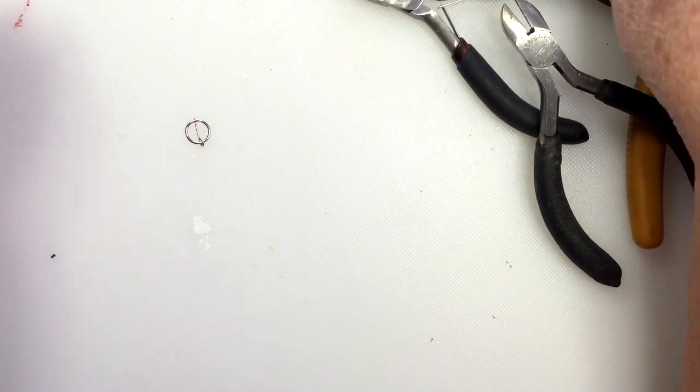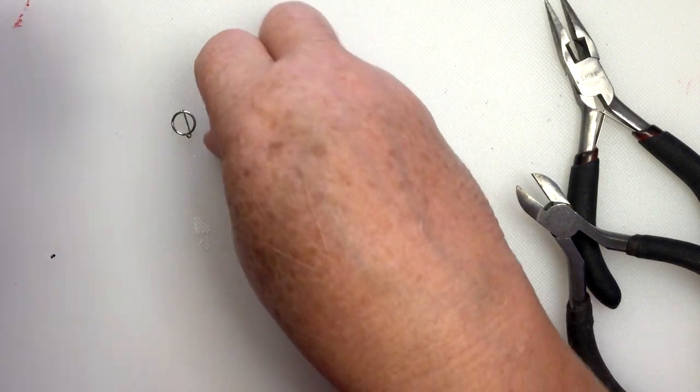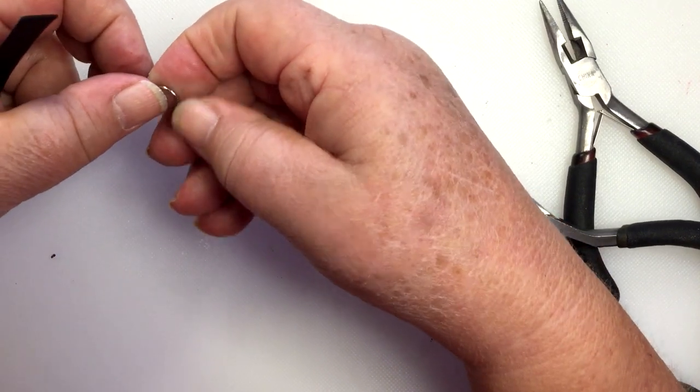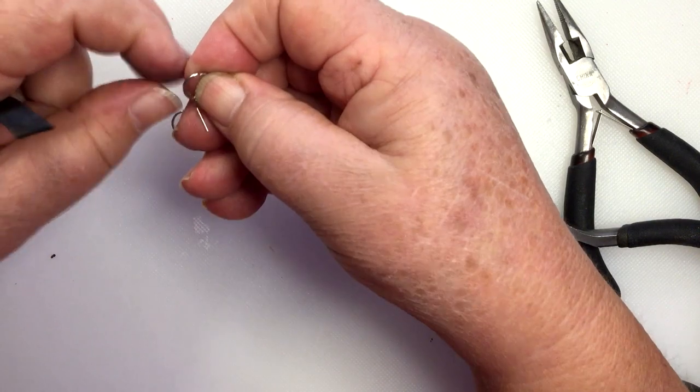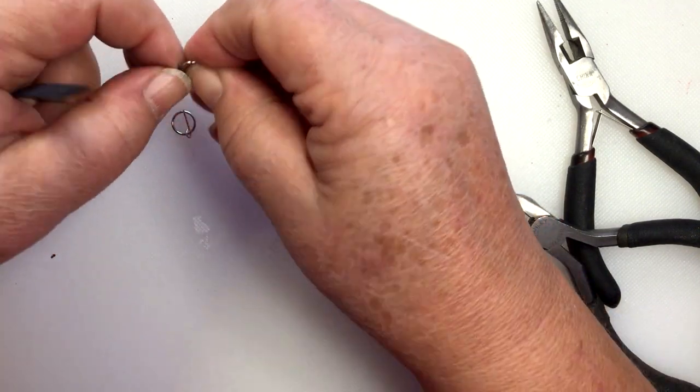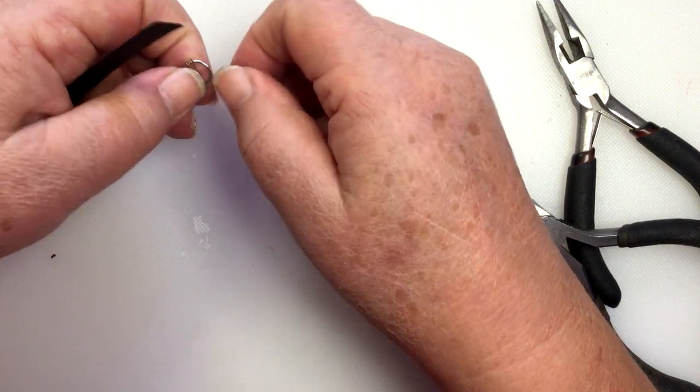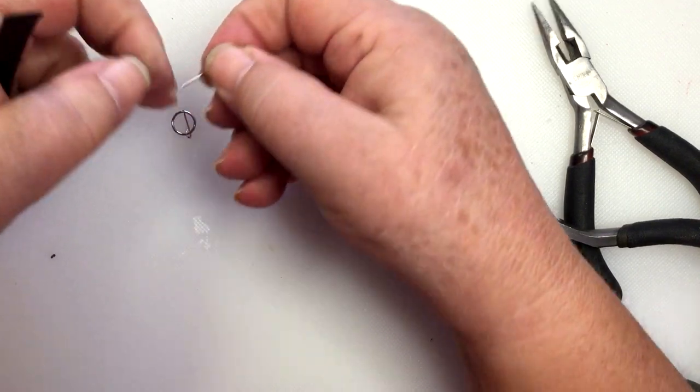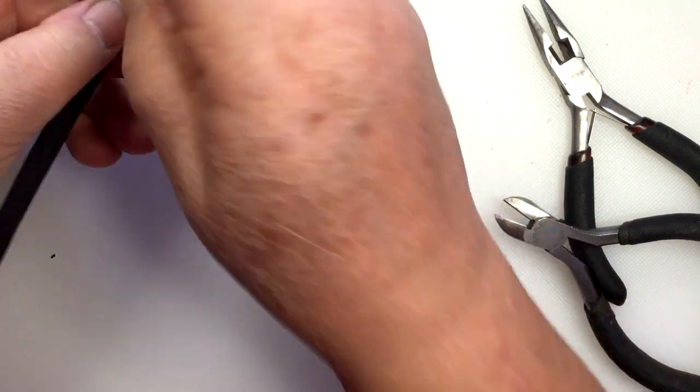The next thing I do is a lot of times there's a sharp point here, so I'm just gonna take a file and file down that point. Less likely to bleed when you tack up if you do that. Alright, so you're gonna make actually four of these, so it's gonna be two for each of the girths or cinches. And you want the tongue to be over and in front.